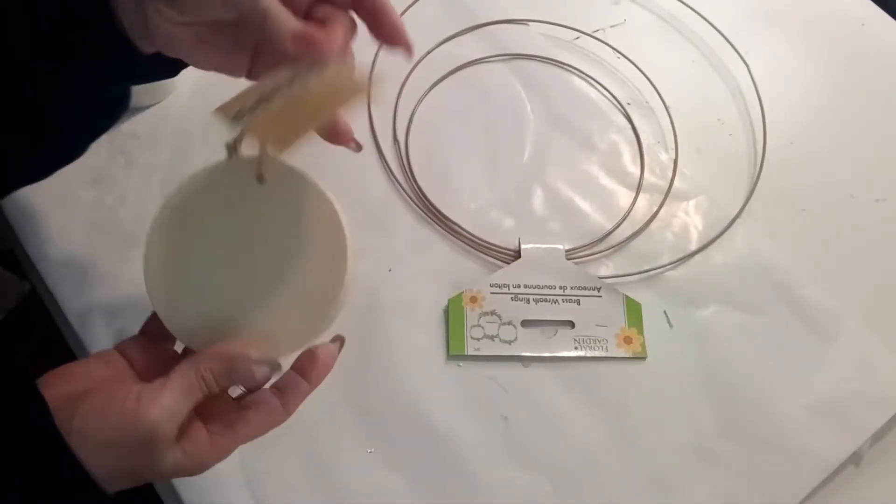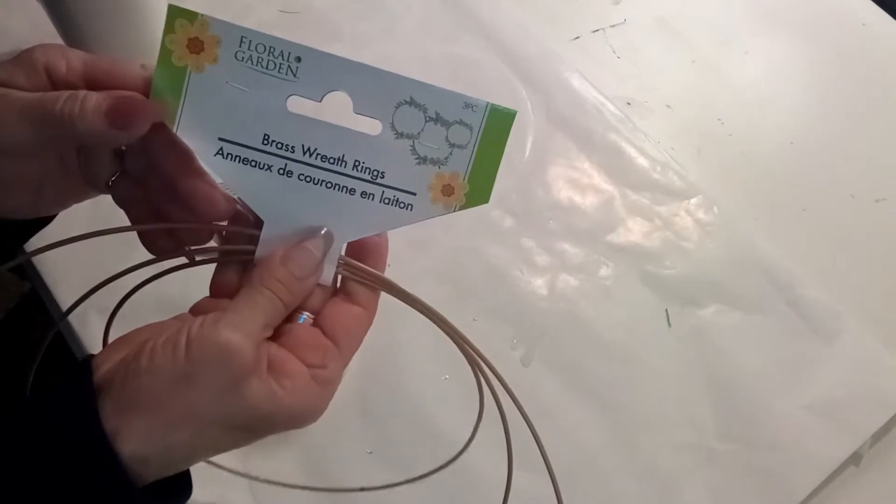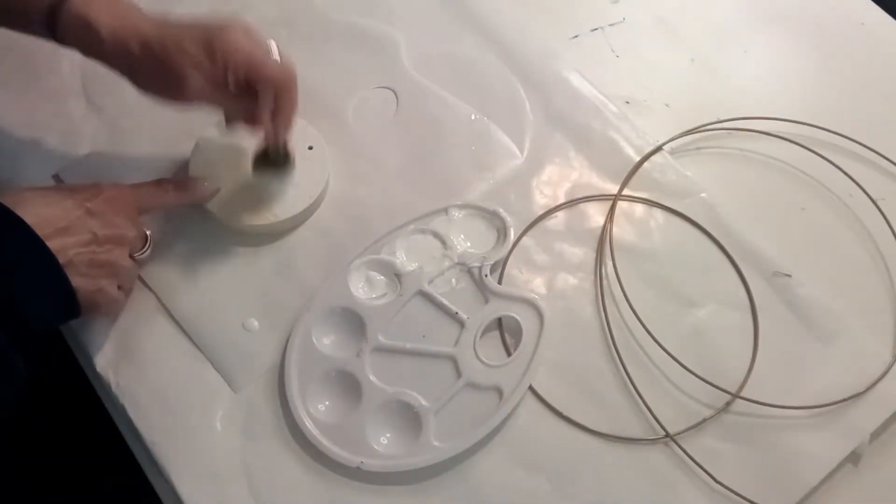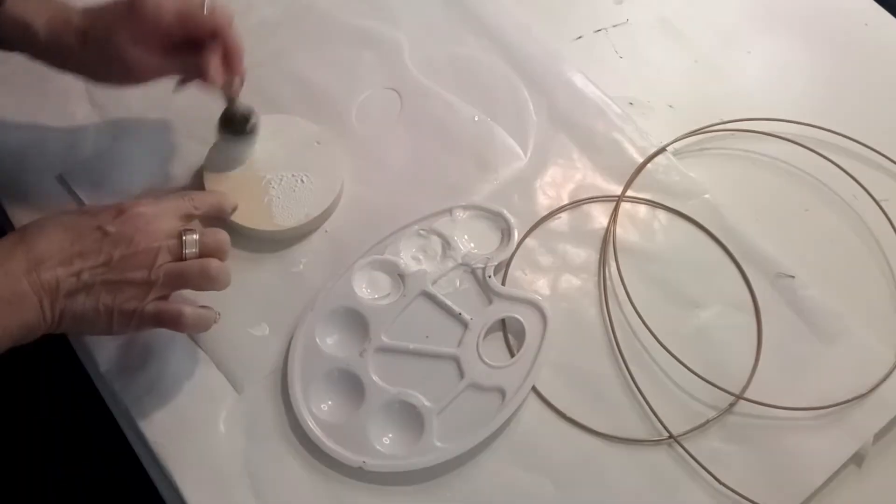Taking this wooden round from Dollar Tree along with these brass rings, I am going to use white chalk paint and paint everything in white.